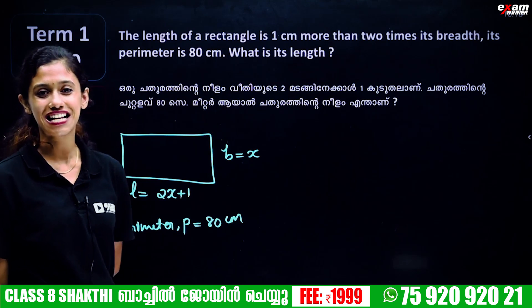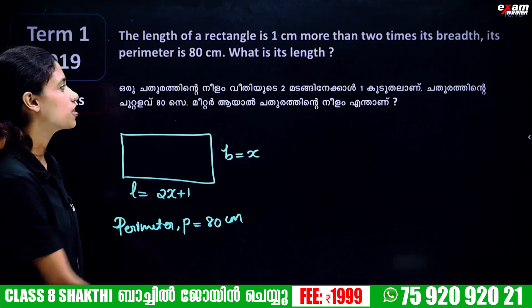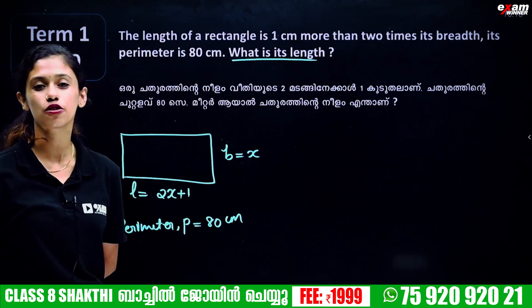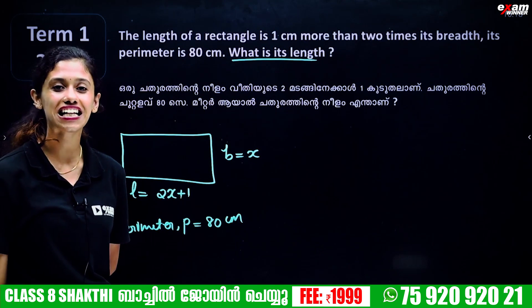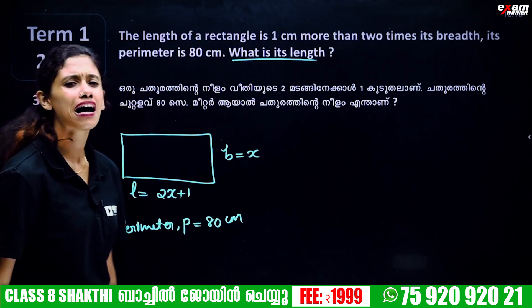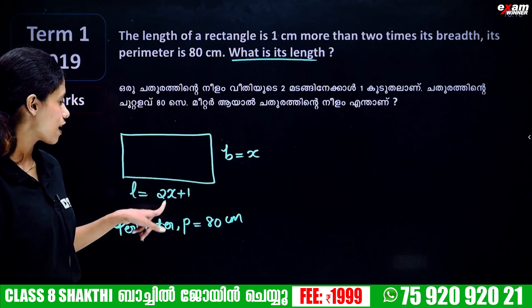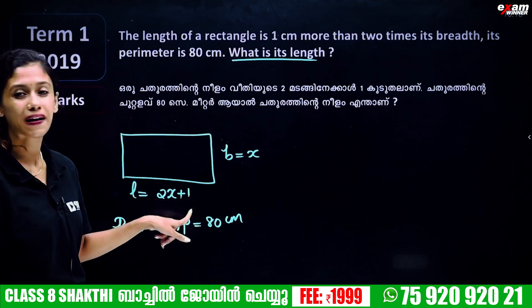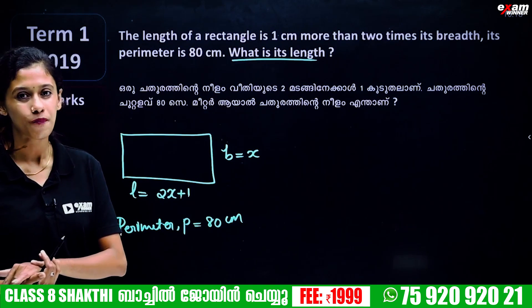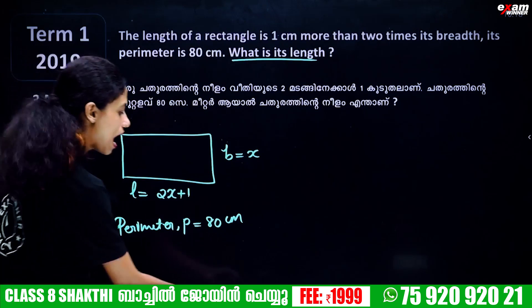Perimeter is 80 centimeters. What is its length and width? The length is 2x plus 1. So we start solving the equation.